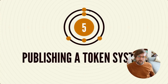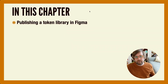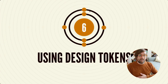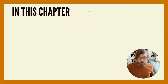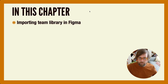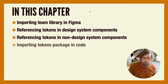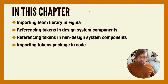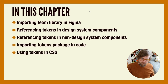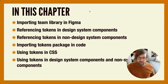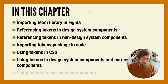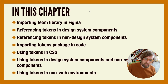Chapter five covers publishing a token system — what that looks like in Figma and in code. Chapter six covers pulling those tokens into your projects, both in Figma and in design system components as well as non-design-system UI work. In code, we'll cover referencing and using tokens in CSS, in design system components, in non-design-system components, and also how non-web environments pull tokens into those worlds.